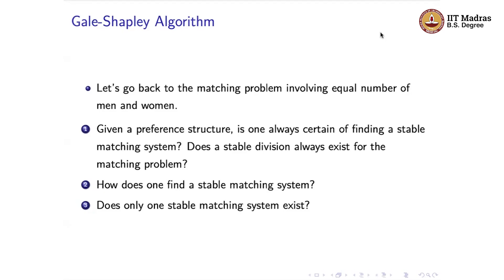Going back to this matching problem involving men and women: is there a guarantee that a stable division always exists? To answer these questions we are going to look at the Gale-Shapley algorithm. The answer is yes — we can be sure that a stable division always exists for this matching problem, and the Gale-Shapley algorithm is one way of actually finding that stable matching.